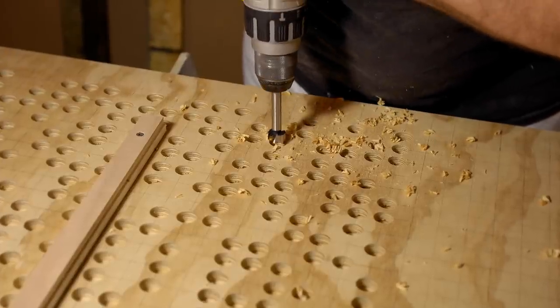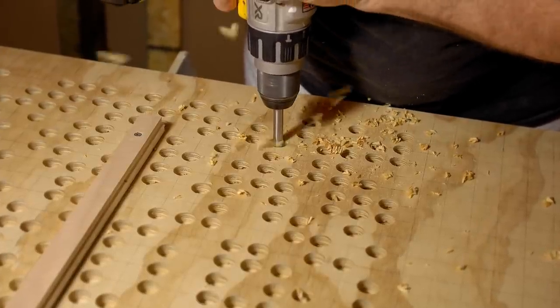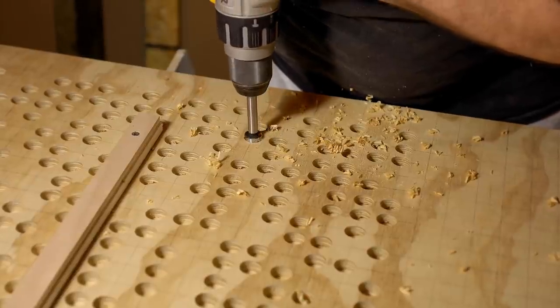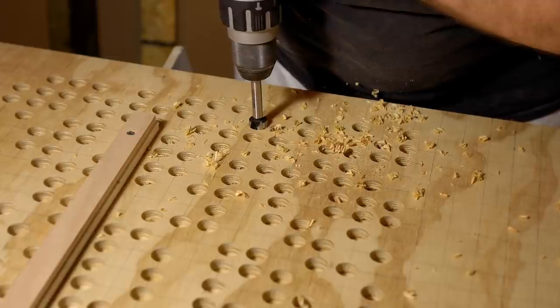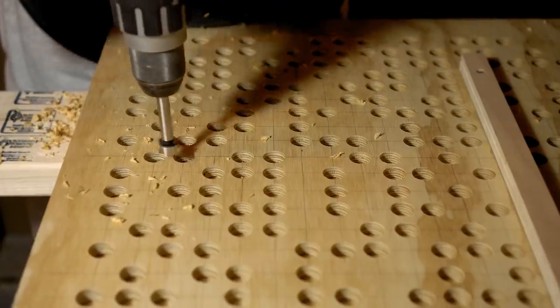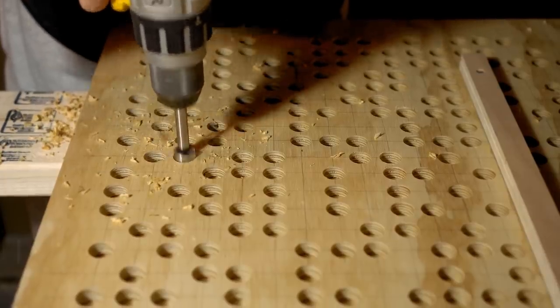That does two important things for you. First it will make drilling the holes a lot easier. When you're drilling with a Forstner bit it works a lot better if there's a pilot hole there. Believe me you'll cut your drill time in half or more.